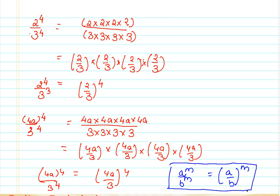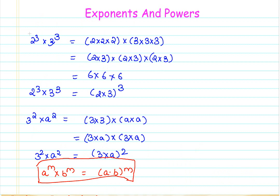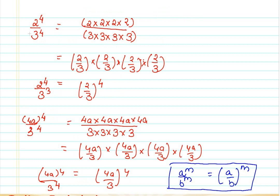In other words, this property is about dividing numbers with different base and the same power or exponent. It says that if I have a raised to m divided by b raised to m, then I can say it is a divided by b, raised to m. The previous property is when we have different bases but the same exponent in multiplication: a raised to m cross b raised to m gives a cross b raised to m. And the division property is a raised to m by b raised to m equals a by b raised to m.